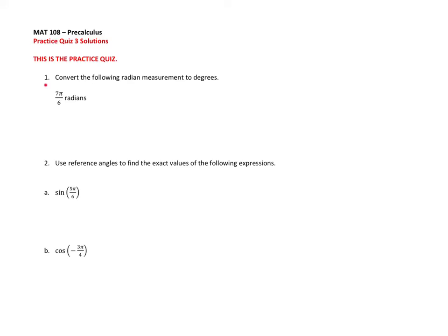In question 1, we want to convert 7π/6 radians into degrees. To do this, we're going to multiply by a conversion factor. We want degrees in the numerator and radians in the denominator. This way, the radians will cancel and degrees will be left over.